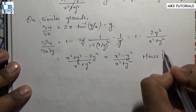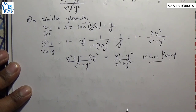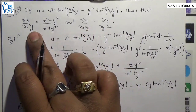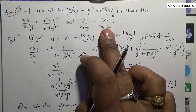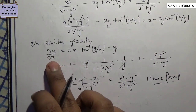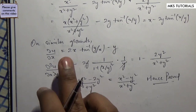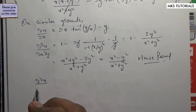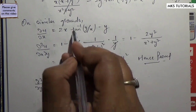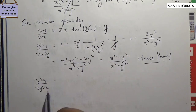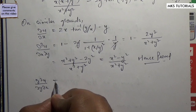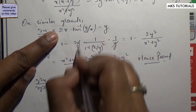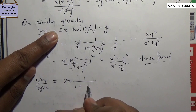Hence proved — that is the first part. Now we have to prove that ∂²u/∂x∂y equals ∂²u/∂y∂x. I have to further partially differentiate, and this will become tan⁻¹, so what I have to do is 1 upon (1 + y/x).